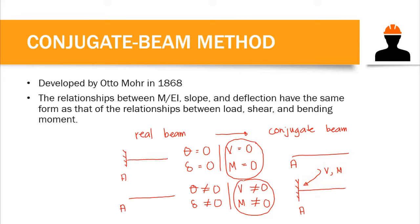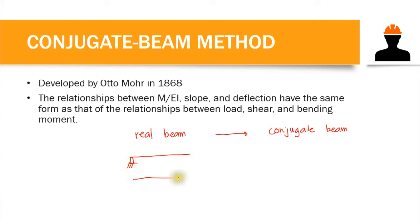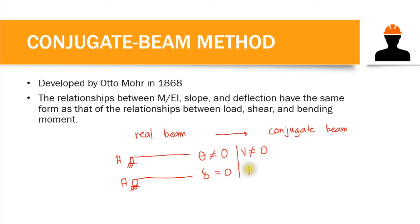What if we have a hinged or roller support on our real beam? At point A with a hinge or roller, we have slope (non-zero) but no deflection (zero). This means shear is non-zero but moment is zero. The support that has shear but no moment is a hinge or roller, so there is no change in the support when converting to the conjugate beam.